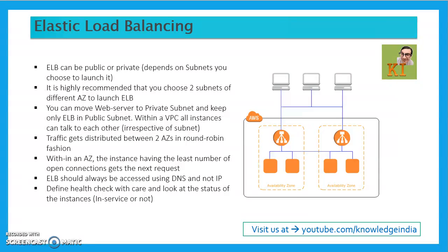Once you use ELB in the public subnet, you can move your web servers to the private subnet and keep only the ELB in the public subnet, exposing the least number of resources to the internet. Within a VPC, all instances can talk to each other regardless of which subnet they are in, so your ELB in the public subnet can route traffic to web servers in the private subnet — no problem at all.